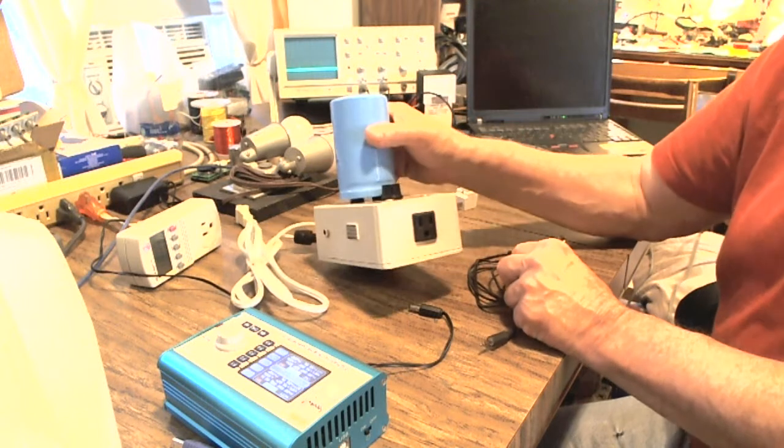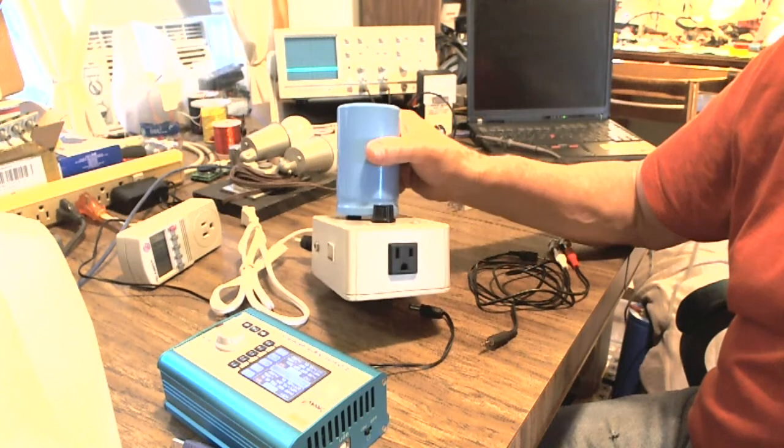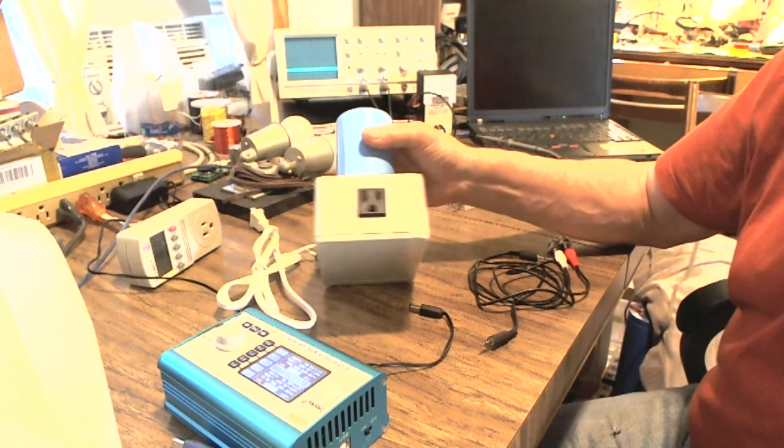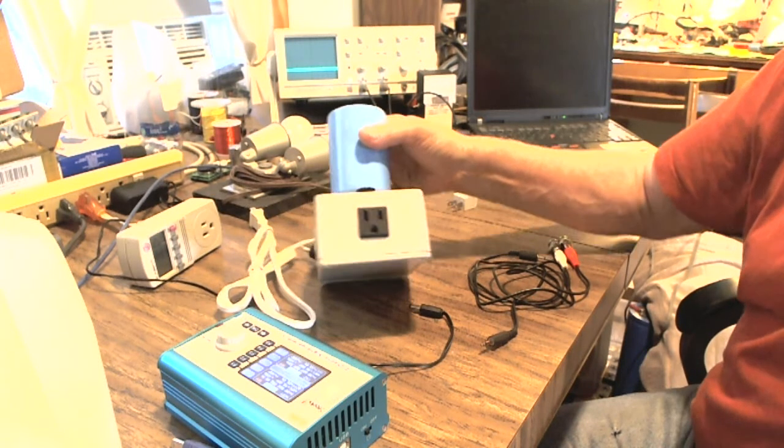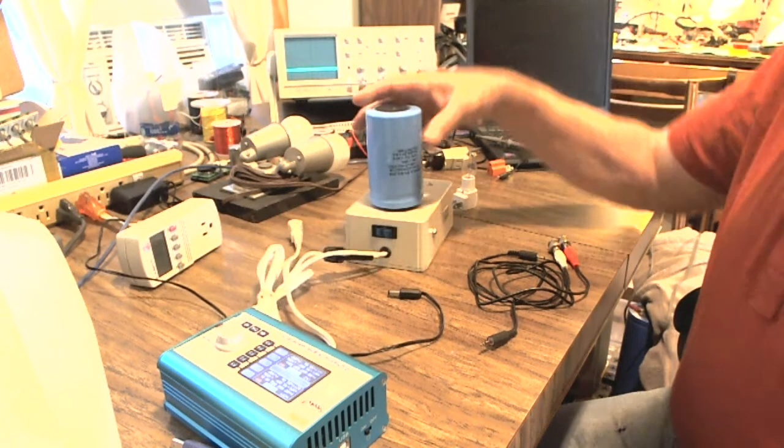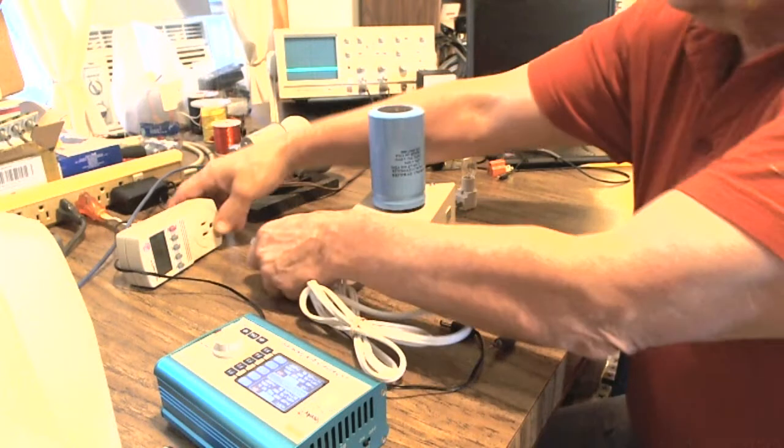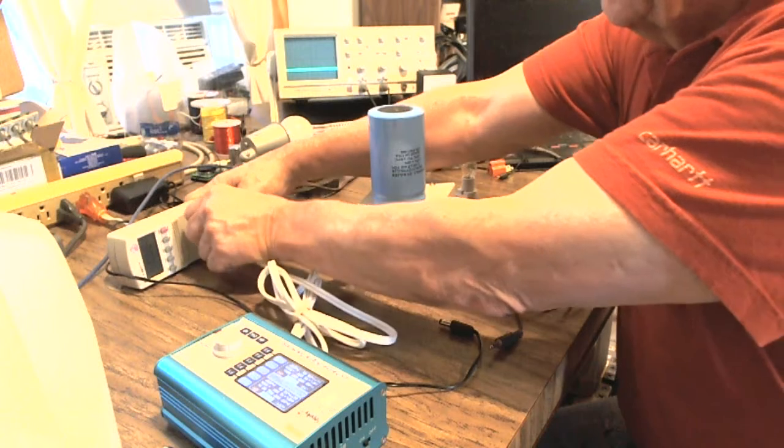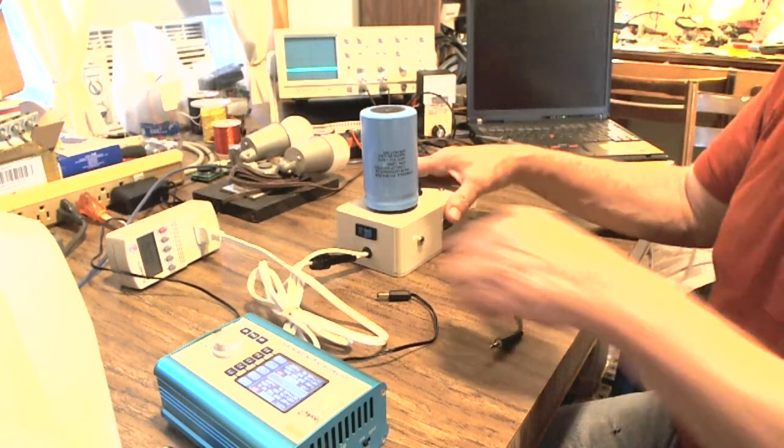And on the output, we have a standard USA three-prong plug. And that's our output. So to connect the unit, pretty simple, we simply plug it in. I'm plugging it into my kilowatt meter so I can monitor amps and voltage and so forth, current.